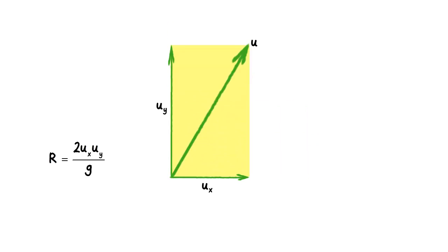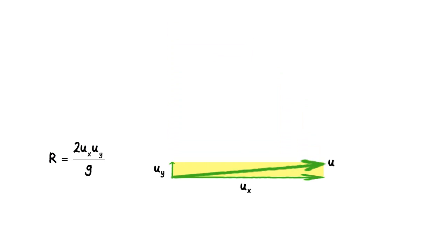For a particular diagonal length, the biggest rectangle you can form is a square.